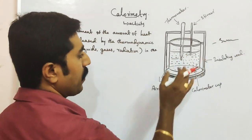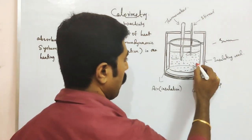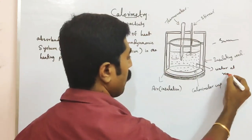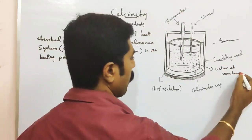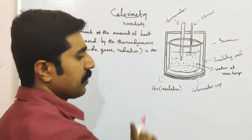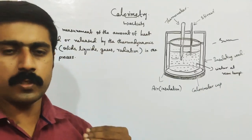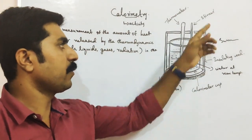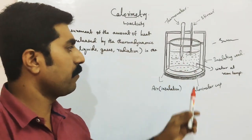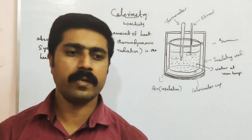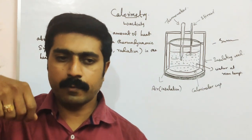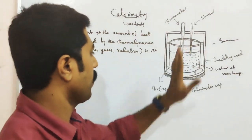In the vessel, enough amount of water is there at room temperature. You introduce a thermometer to measure temperature, and a stirrer. The stirrer is used to distribute and spread the heat evenly so that the water transfers heat uniformly.